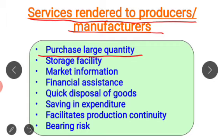Wholesalers buy goods in large quantities from manufacturers and sell in small quantities to retailers. Producers are able to sell their total production and are saved from issues related to storage or selling of the product in the market.